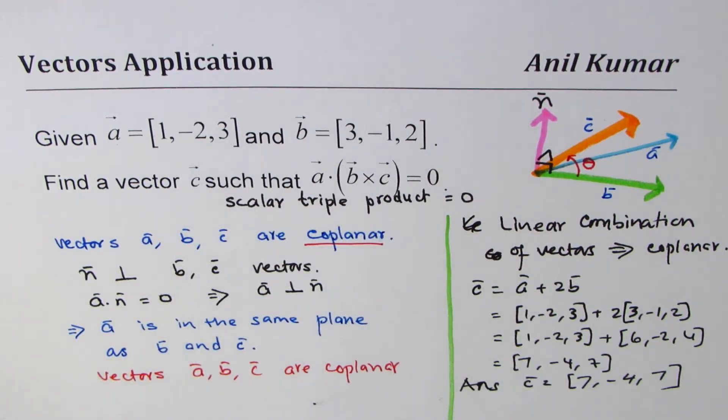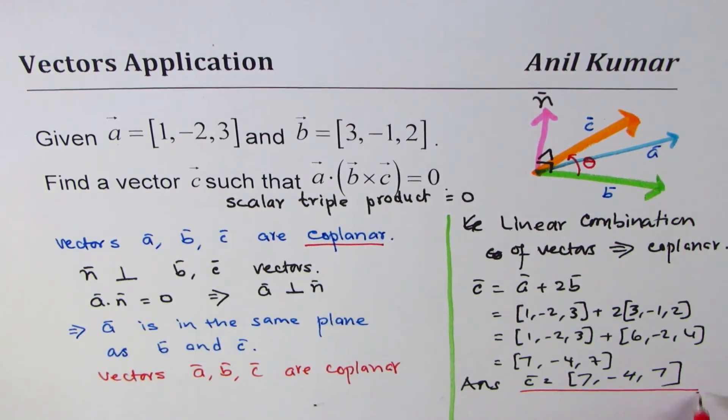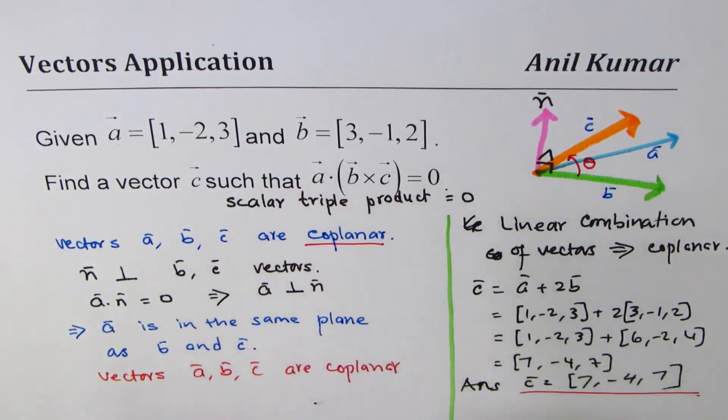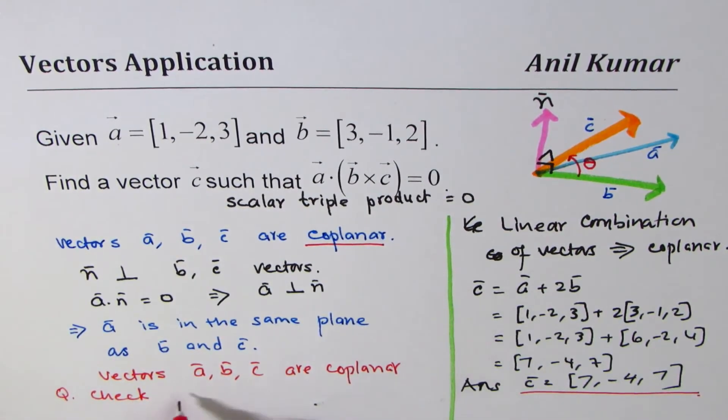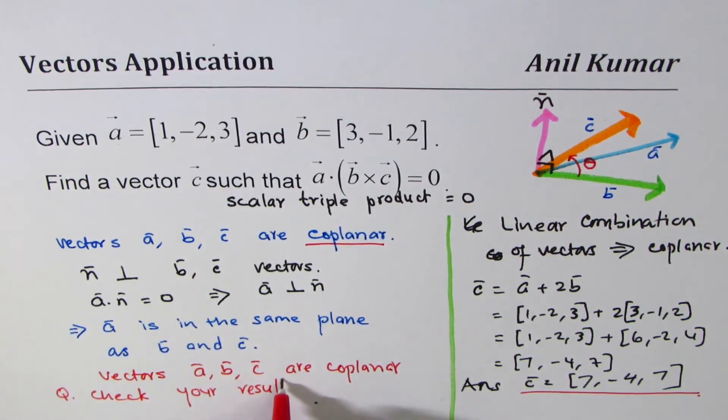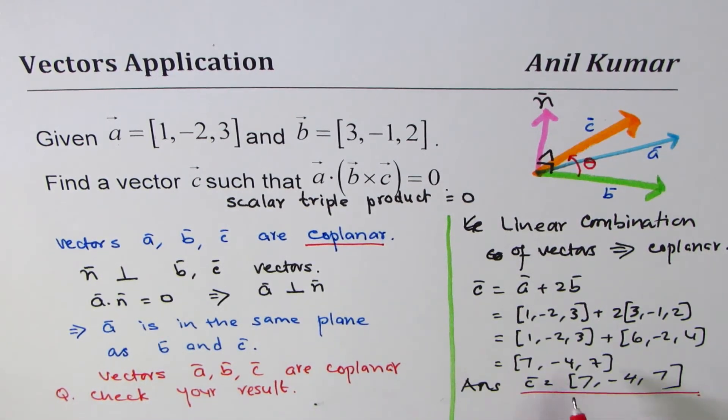Now as an exercise, you could check your result. Find scalar triple product of a, b, and c and check whether you really get zero or not. That's an exercise for you.